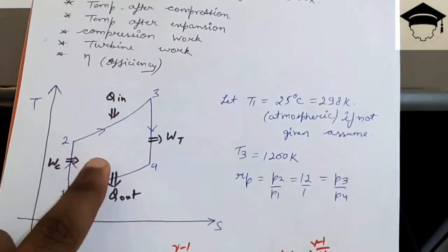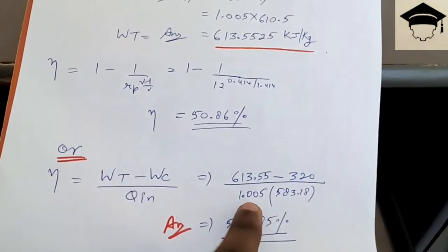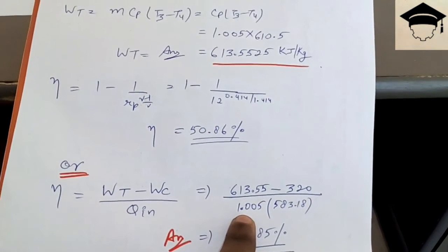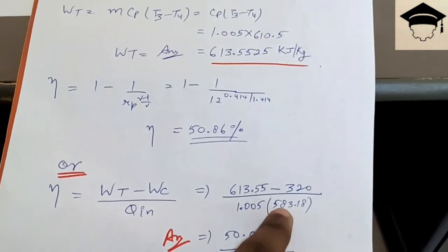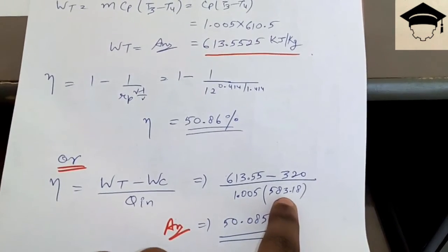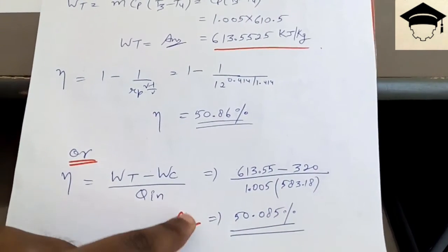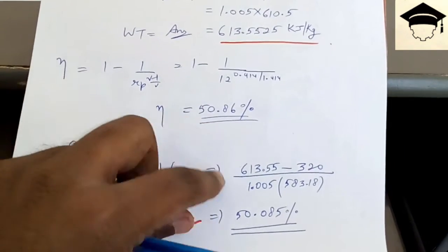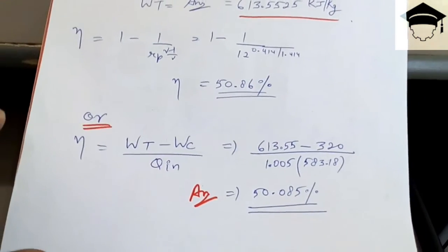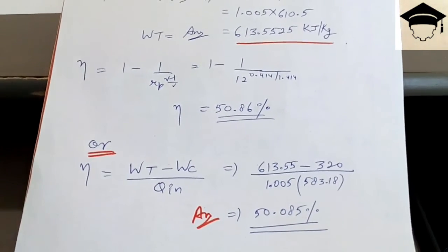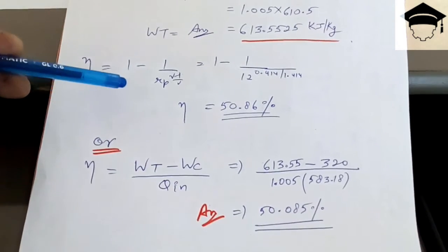It depends on the examiner, but my recommendation is to solve step by step: find Q_input separately, write W_turbine and W_compressor, write Q_in, then substitute into the efficiency formula. University exams carry step marking, so this matters. For competitive exams like GATE or IES where time is limited, you can use the direct formula.